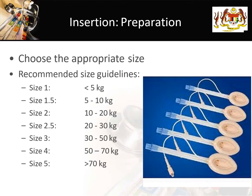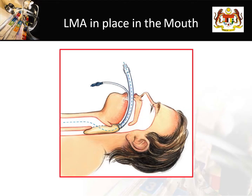Prior to LMA insertion, you must choose the correct size. There are recommended size guidelines according to the weight of the patient. For adults, we normally use size 3 or 4, and for larger adults, size 5. Ideally, the LMA should be placed sealing the hypopharynx with the tip closing the esophageal opening, and oxygen is delivered via the tube through the aperture bars into the patient's lungs. However, there is still a risk of aspiration, and the LMA is not a definitive airway. We will learn how to insert the LMA at the skills station.